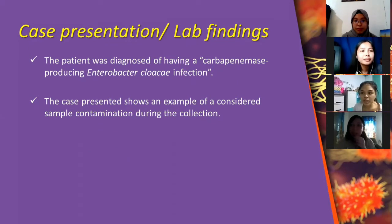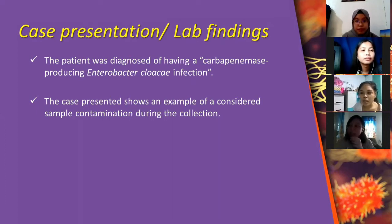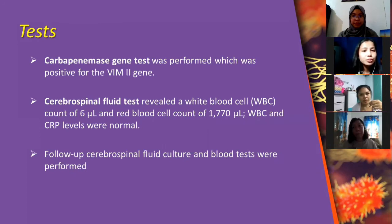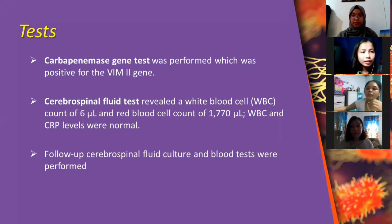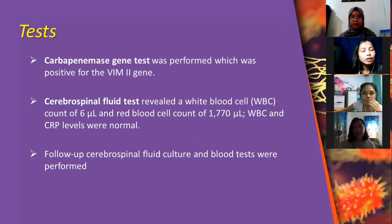The patient was diagnosed with a carbapenemase-producing Enterobacter cloacae infection. The case presents an example of considered sample contamination, because the patient shared a bed with a patient positive for carbapenemase-producing Enterobacter cloacae. Due to resistance to ertapenem and imipenem, a carbapenemase gene test was performed, which was positive for VIM type 2 gene. VIM stands for Verona Integron Metallo-beta-lactamase, which are enzymes that hydrolyze almost all clinically available beta-lactam antibiotics. The cerebrospinal fluid test revealed a white blood cell count of 6 per microliter and a red blood cell count of 1,770 per microliter.